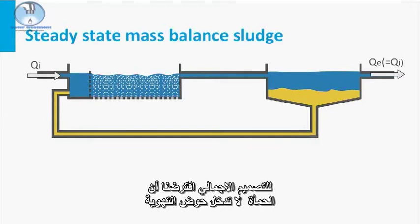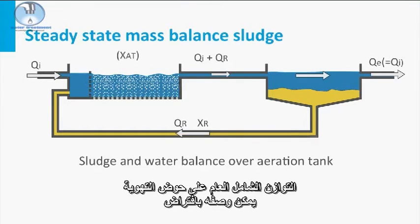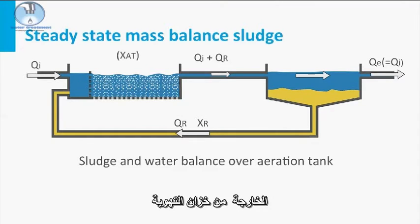For the total design, we assume that there is no sludge entering the aeration tank with the influent flow, and also the sludge leaving with the effluent flow is negligible. The overall mass balance over the aeration tank can therefore be described by assuming that the total sludge mass coming into the aeration tank equals the total sludge mass leaving the aeration tank.